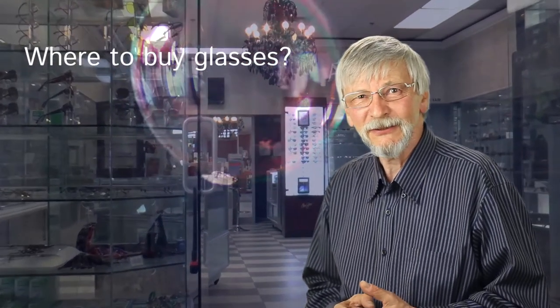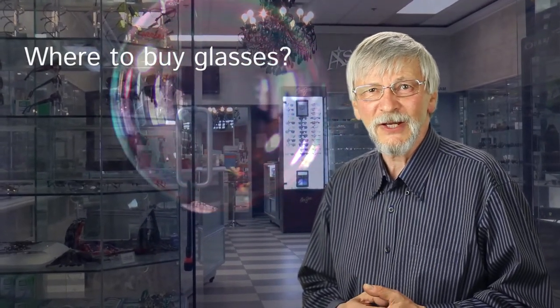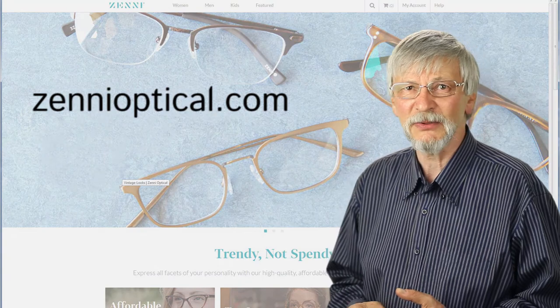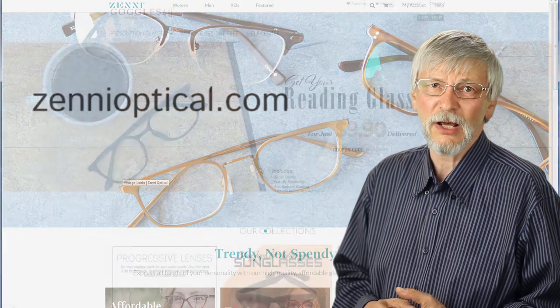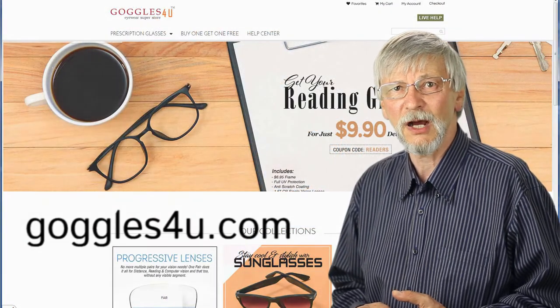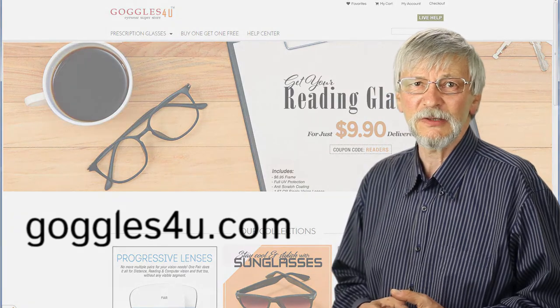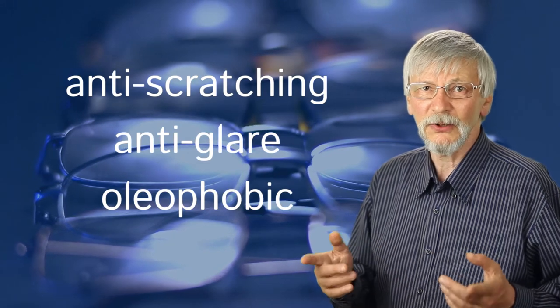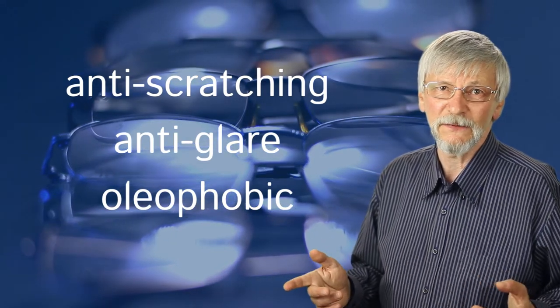Where to buy glasses? Even two different pairs of glasses, let alone three or four, can be very expensive at a brick-and-mortar optical store. To save a lot, you can purchase inexpensive pairs of prescription glasses online. Examples of good online stores are zenni.com or goggles4u.com. A pair of bifocals will cost about $40 to $60 there.